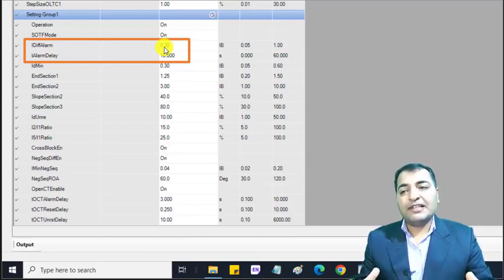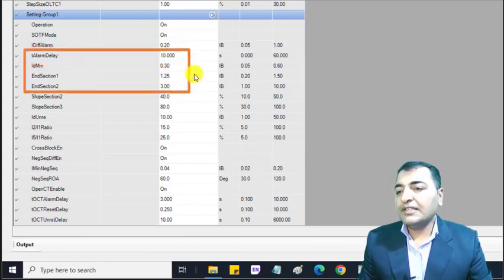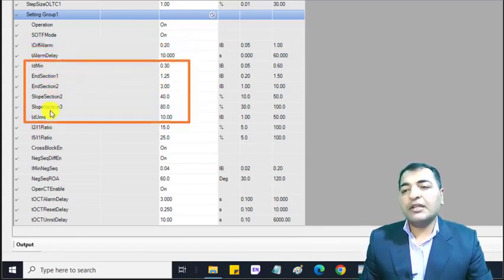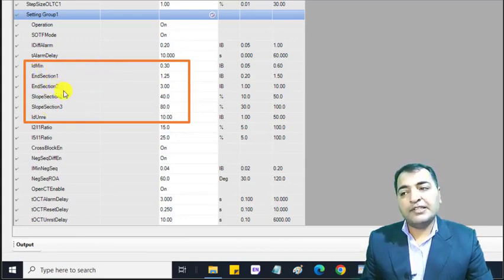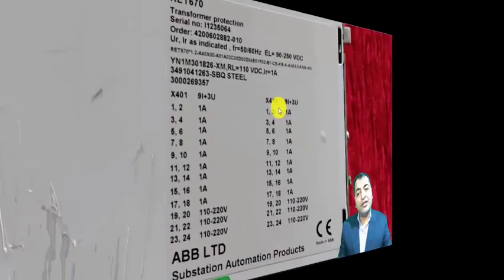The next parameters are for the differential characteristics: I diff min and end section one and section two, slope one, slope two, and I unrestrained. Another term is inserted in the X4 11.